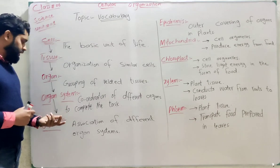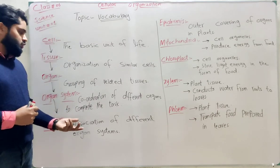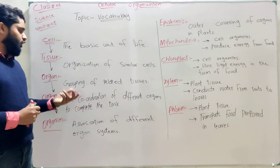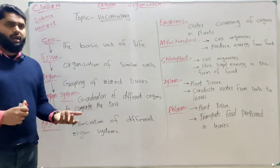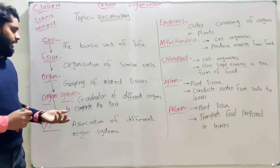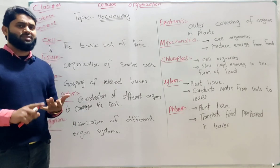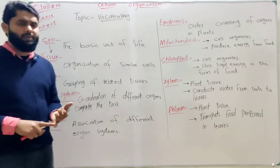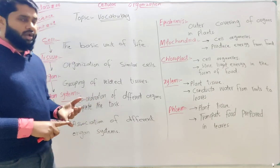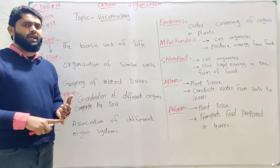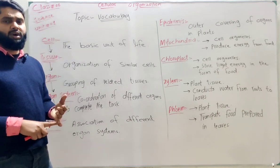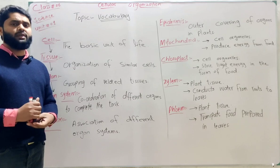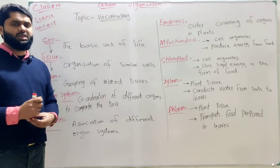Next we see organism: the association of different organ systems. Association means working together in coordination. In animals, there are different organ systems like the digestive system, respiratory system, circulatory system, nervous system, lymphatic system, and excretory system. These systems work in coordination, and due to this the organism — whether animal or plant — functions as a whole. In plants, there are two organ systems: the root system and the shoot system.